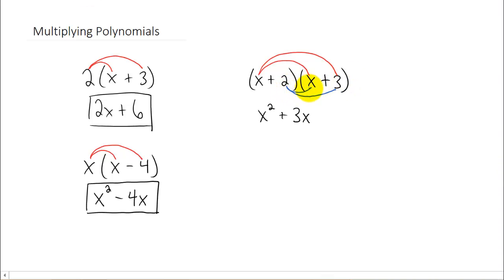So 2 times x is 2x, 2 times 3 is 6. And now you'll notice that you have a couple of like terms right here in the middle. 3x plus 2x can be combined because they're like terms into 5x. And then the x squared and the 6 just kind of have to be carried down.